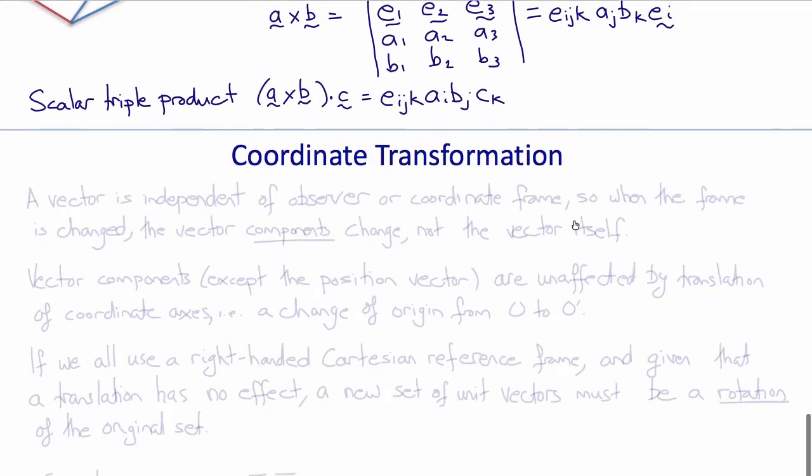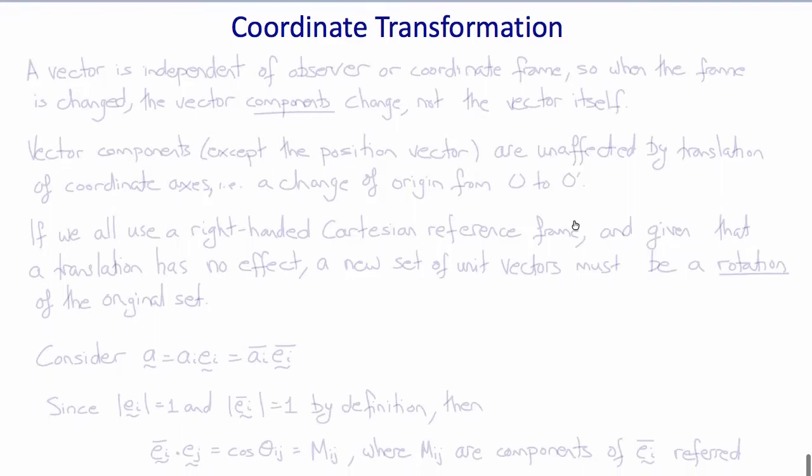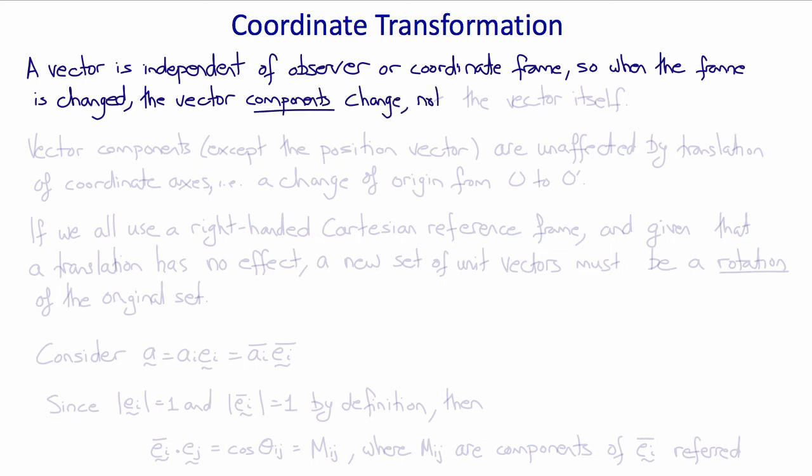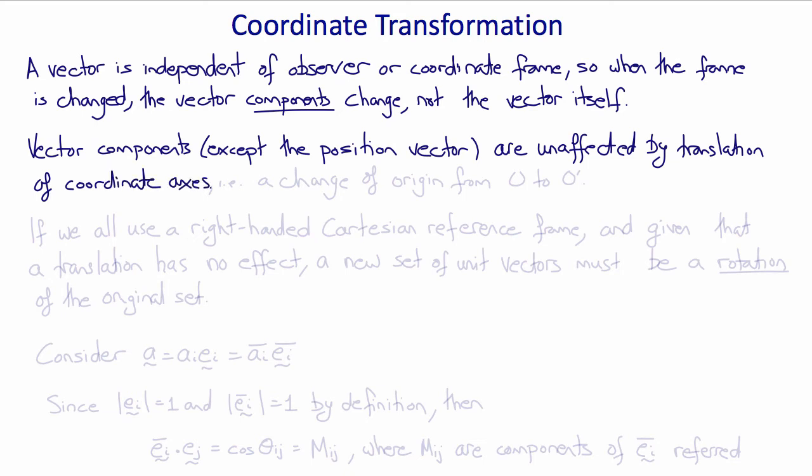Now let's look at what happens when we change the coordinates. Now a vector is independent of observer, it's a physical quantity, and it therefore must be independent of the coordinate system or frame. So when the coordinates changed, the vector components must change, not the vector itself. Now with the exception of the position vector, the vector components will be unaffected by a translation of the coordinate axes, i.e. a change of the origin from, say, O to O prime.